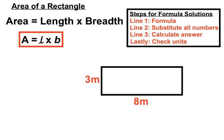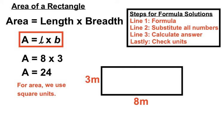If we had numbers like 3 meters and 8 meters, all we have to do for the area is put the length, 8 meters, times 3 for the breadth. 24 is our number answer. For area, we're looking to use square units, so instead of meters, we have meters squared - 24 meters squared.